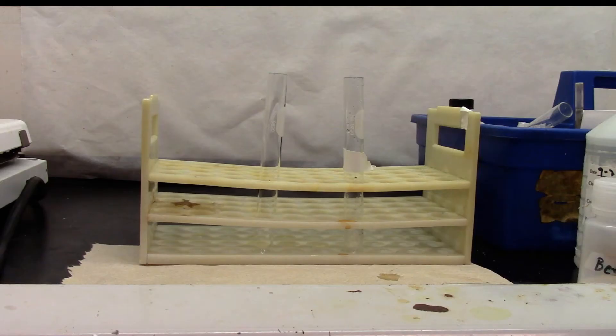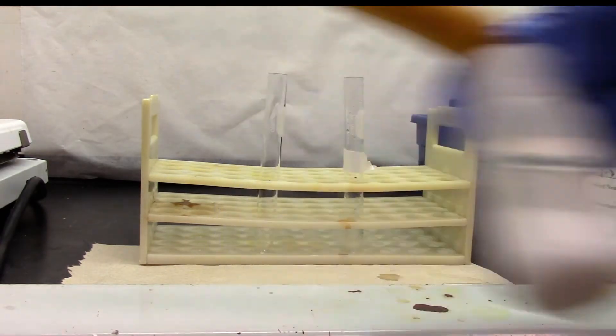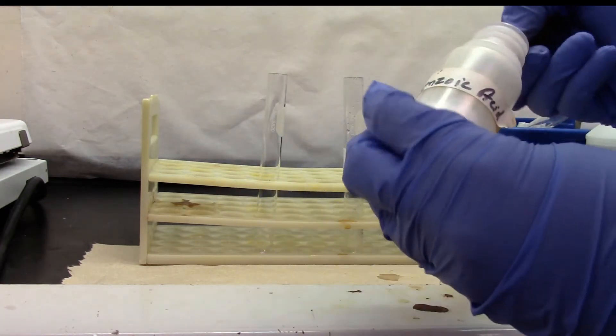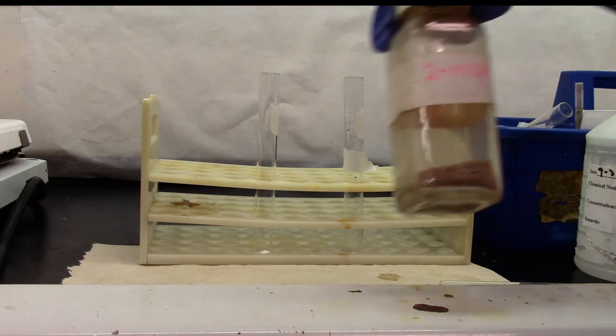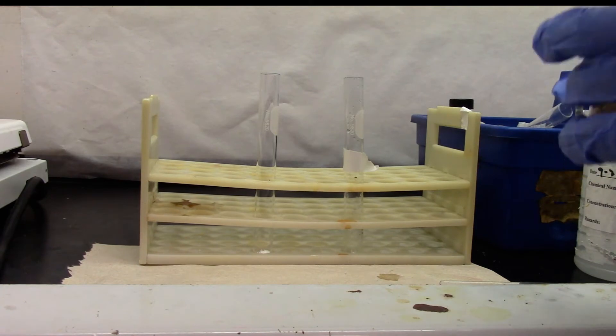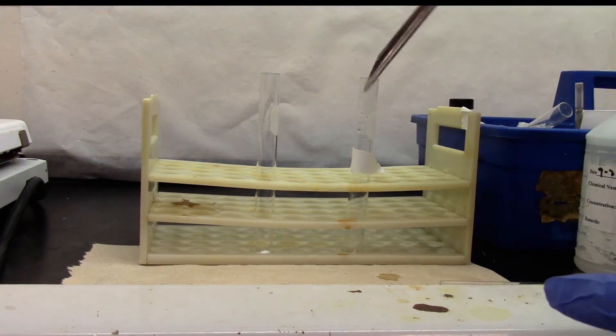We will be doing solubility tests for carboxylic acid. Benzoic acid is my sample. I will add a pinch of benzoic acid. 2-naphthol is my negative test. I am going to add a pinch of beta-naphthol.